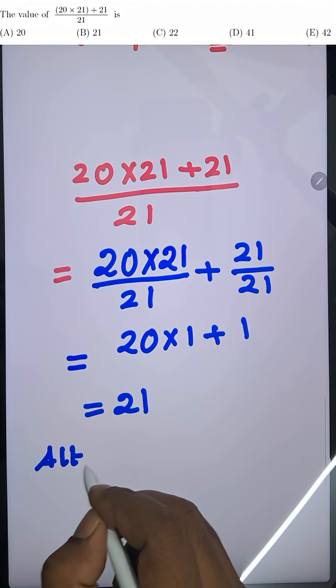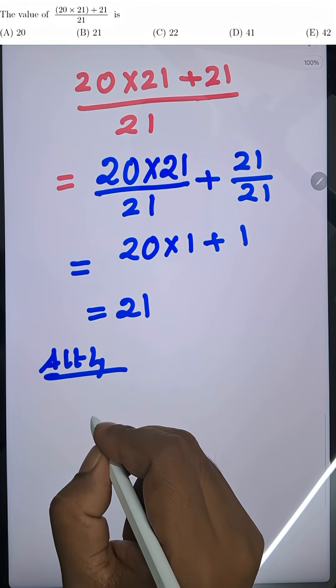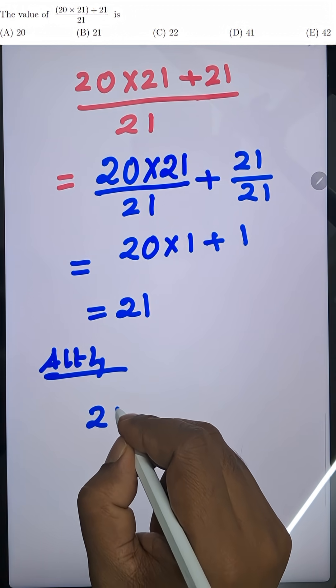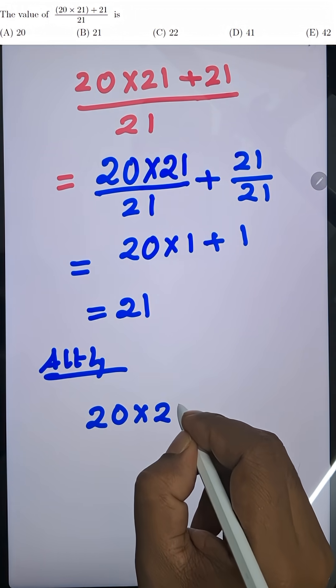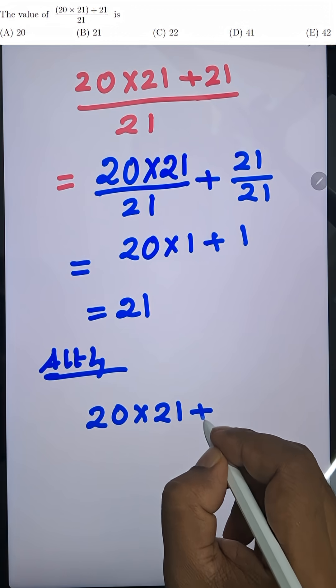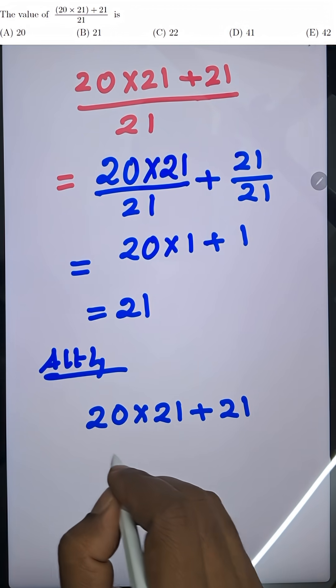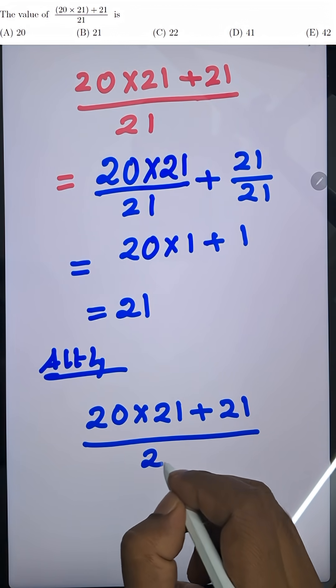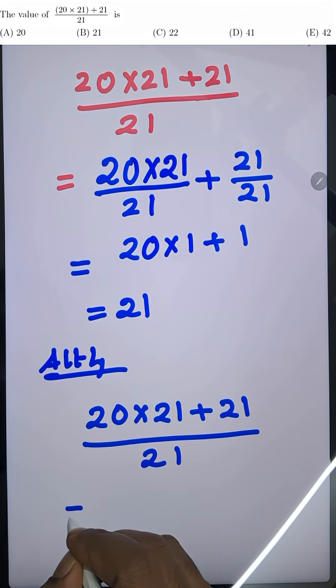Now let's solve this using the common factor method. We start with 20 into 21 plus 21 all divided by 21. From the numerator, we can take 21 as common.